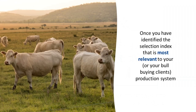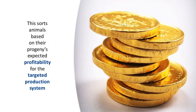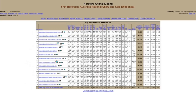Once you have identified the selection index that is most relevant to your or your bull buying client's production system, all animals being considered for selection should be ranked using the chosen selection index. This sorts animals based on their progeny's expected profitability for the targeted production system. Animals can be ranked using the available web search facility.